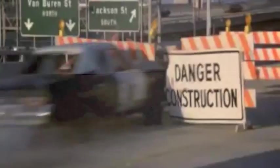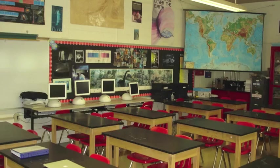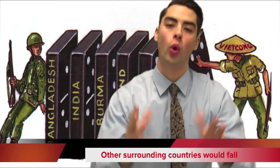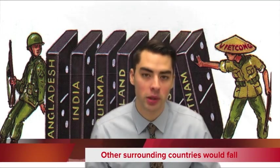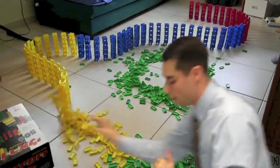Today our topic is going to be the domino theory. This might be an introduction for some of you learning in global history, whereas for others it might be a review for those of you learning United States history. The domino theory is a belief that if one country, nation, or region fell to communism, then the other surrounding countries would fall in a domino effect.